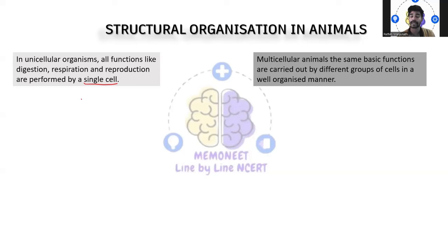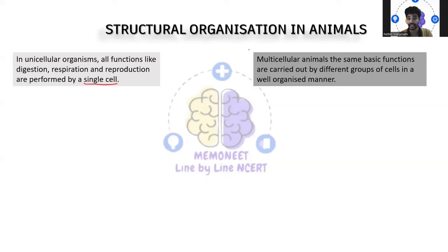For example, amoeba. When you see such organisms, reproduction, respiration, and movement — each individual cell performs its independent function. That means the cells are not dependent on other cells. Something like that can be seen in unicellular organisms. Coming to multicellular organisms, these organisms can be seen in evolved life forms. Their basic functions are carried out by different groups of cells in a well-organized manner.